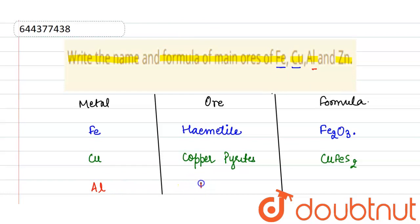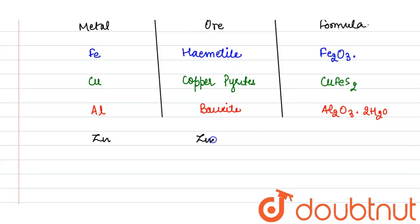Its principal ore is bauxite. Its formula is Al2O3·2H2O. Next, it is zinc. Its main ore is zinc blende.